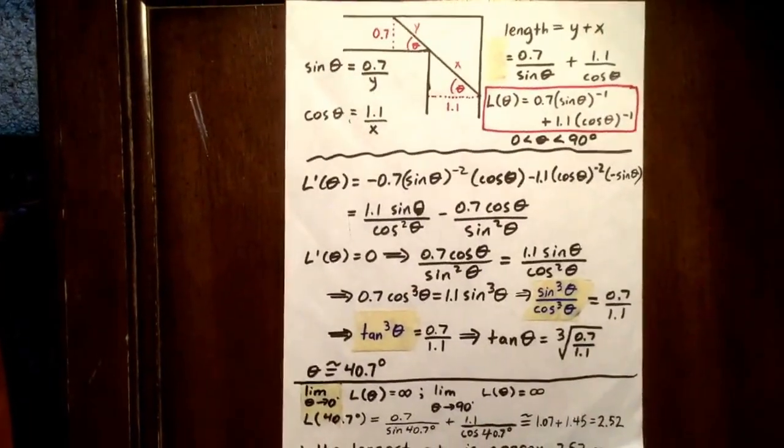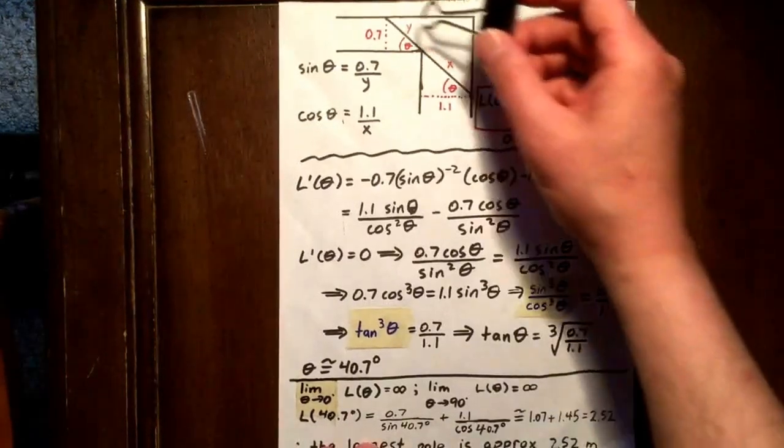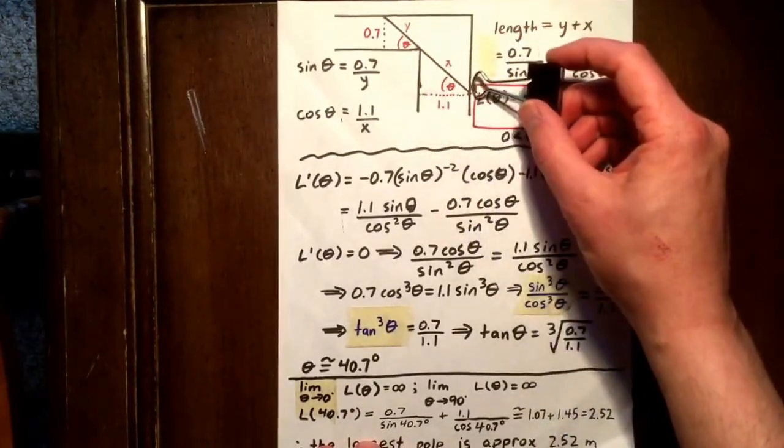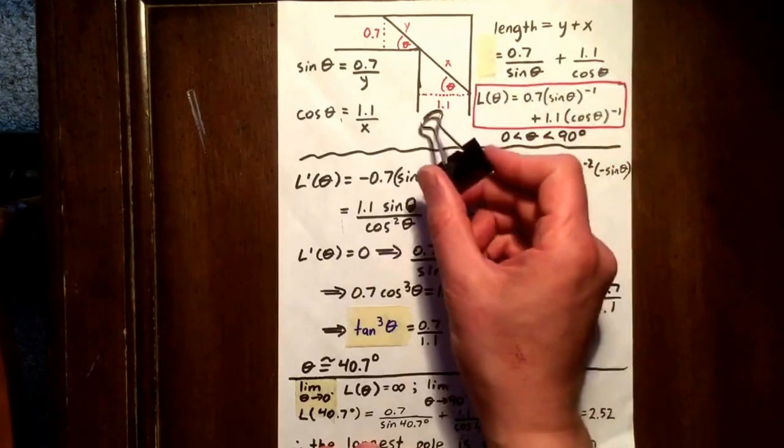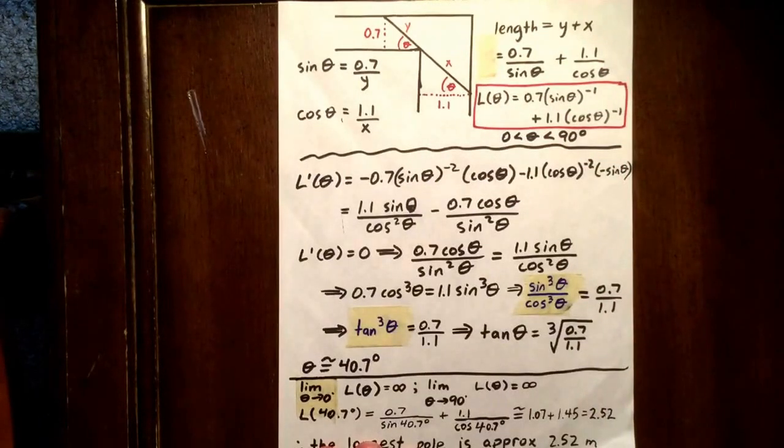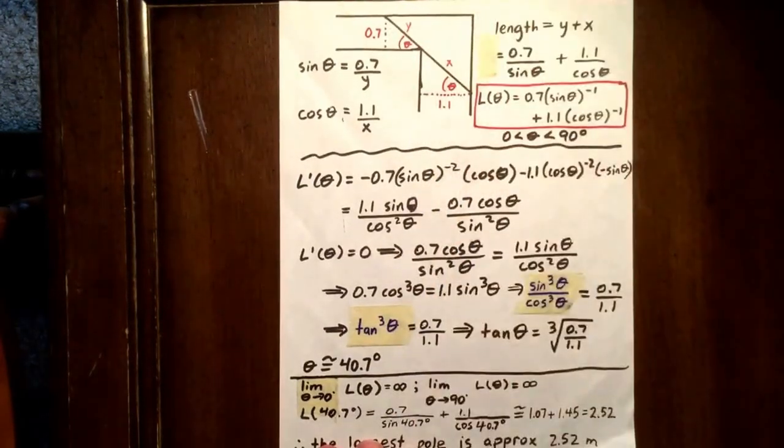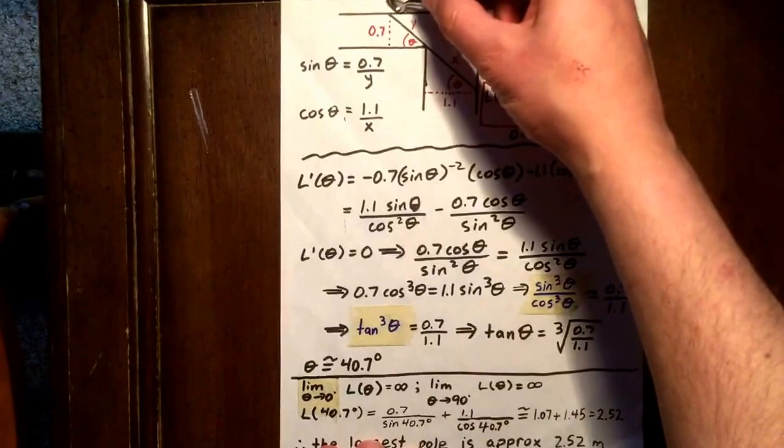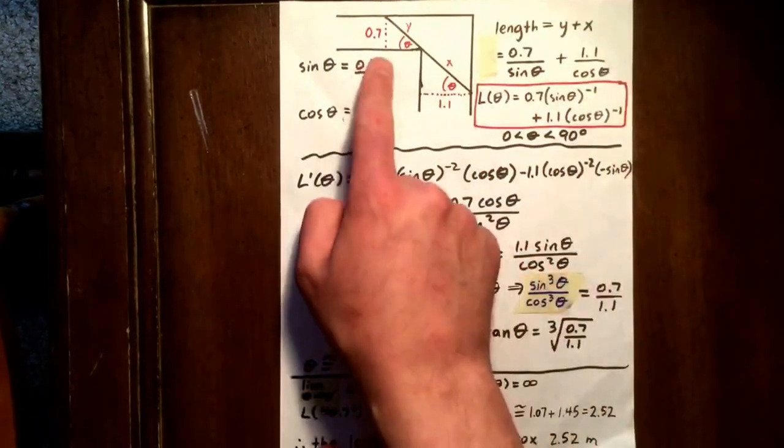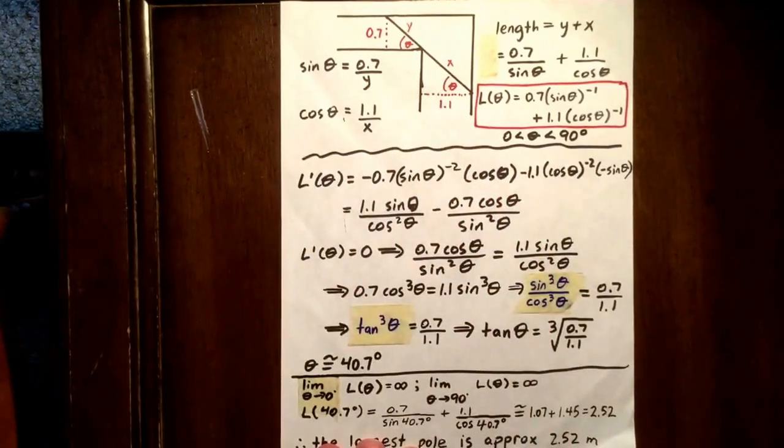So we start with a diagram. We've got the pole here in black. One of the hallways is 1.1 meters wide, and the other one is 0.7 meters wide. Now, we can think of that pole as broken into two parts, this Y and this X.